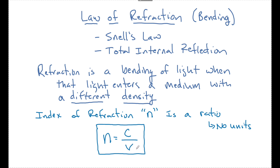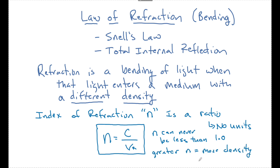We can also find the speed that a wave is going in a medium if we know its index of refraction. We know from modern physics that C is as fast as an object can go, so n can never be less than one. The greater the n is, the denser that material or medium is. With more density, we see a slower speed — as n goes up, V inside that medium goes down. They're indirectly related.